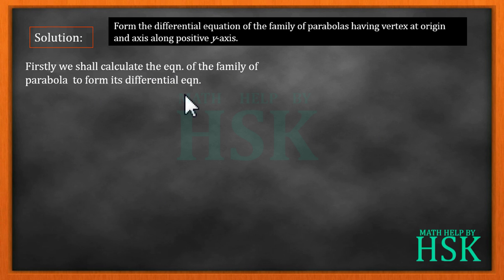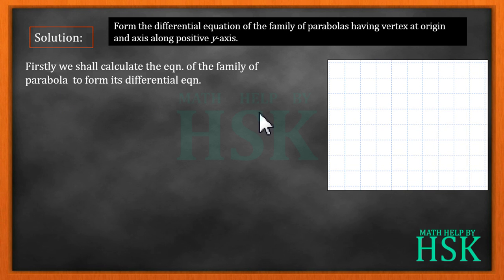For this we consider this coordinate axis and this is origin. According to the question we have to find the family of parabolas having vertex at origin, so this point would be vertex and the axis along positive y-axis. So this positive y-axis is going to form its axis.